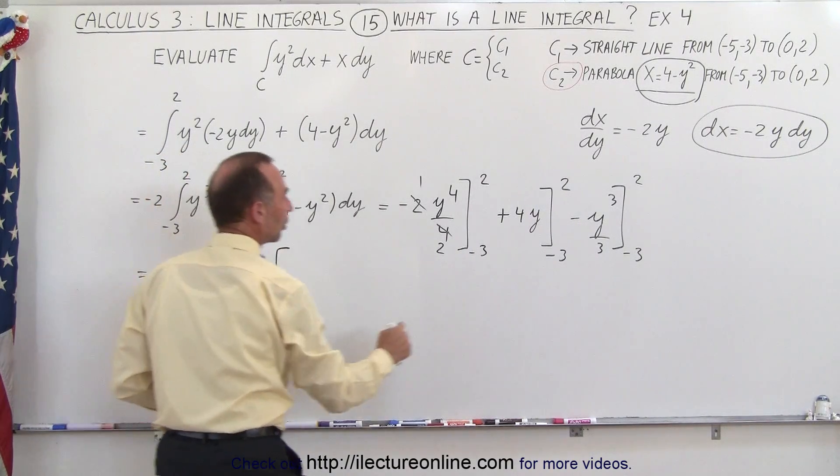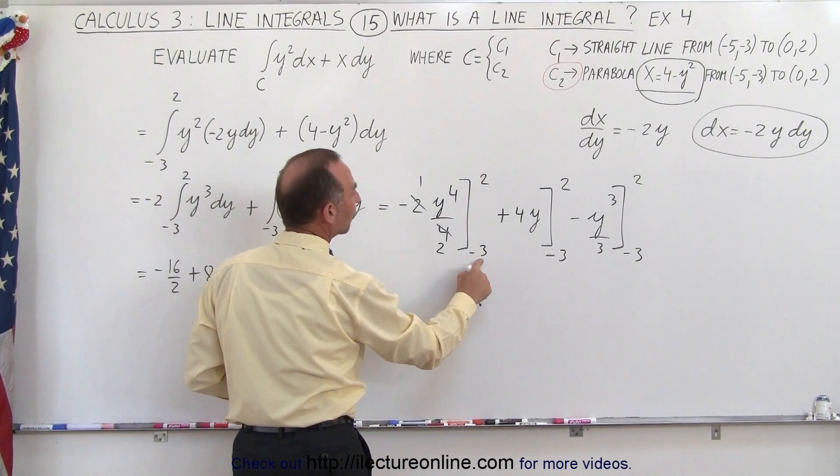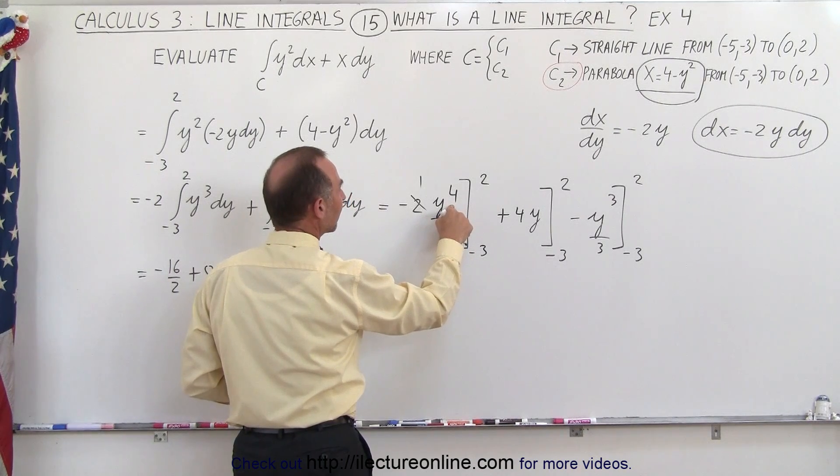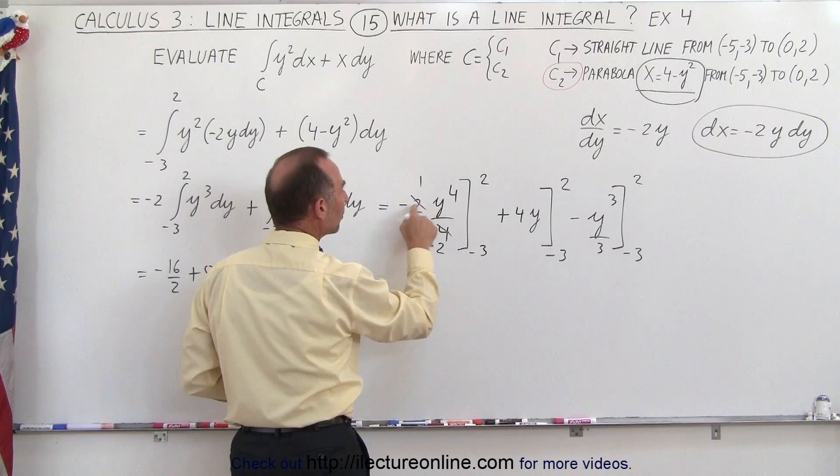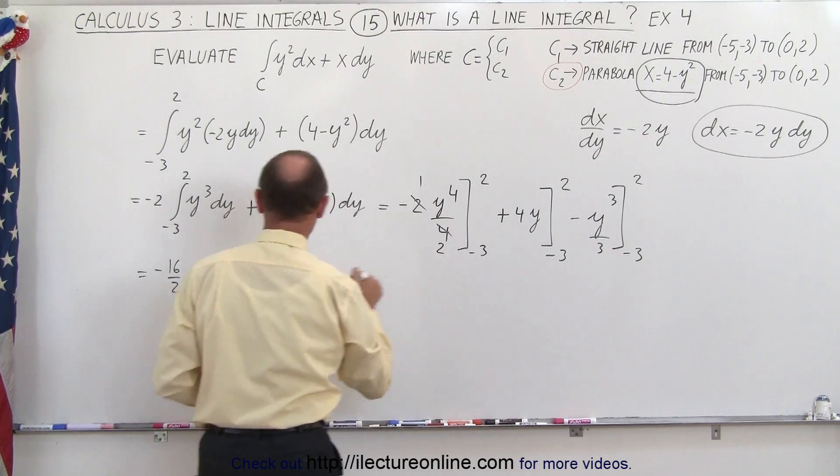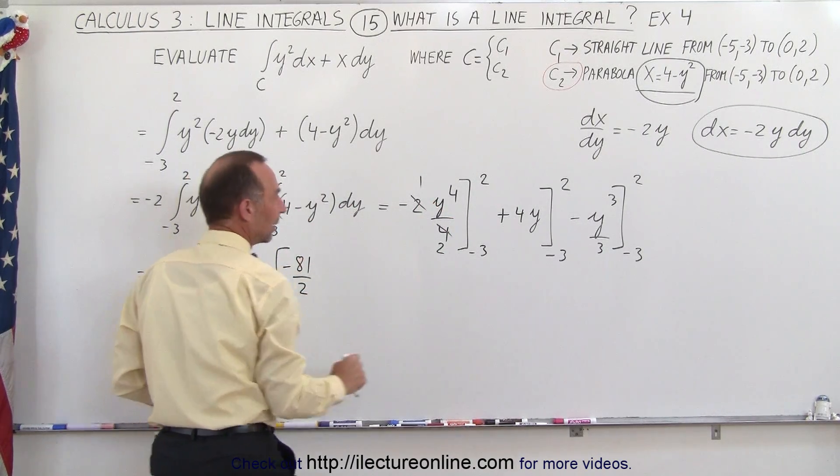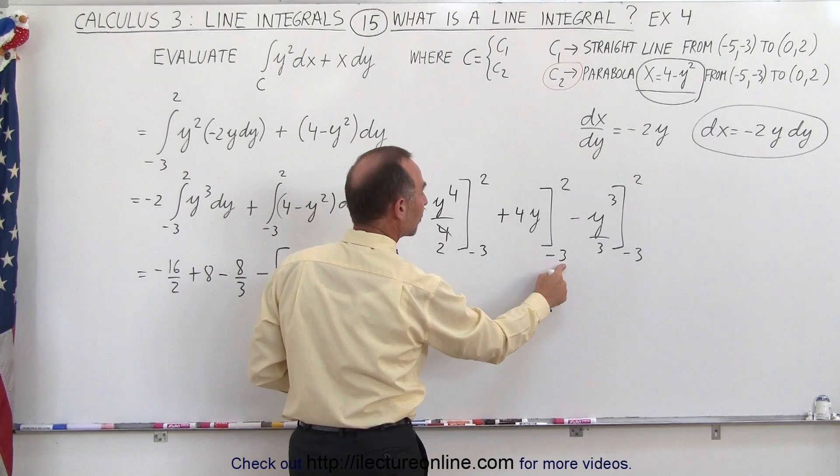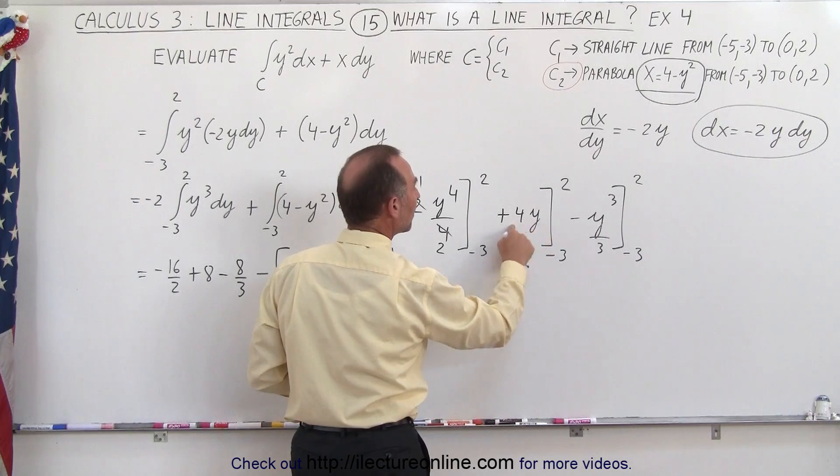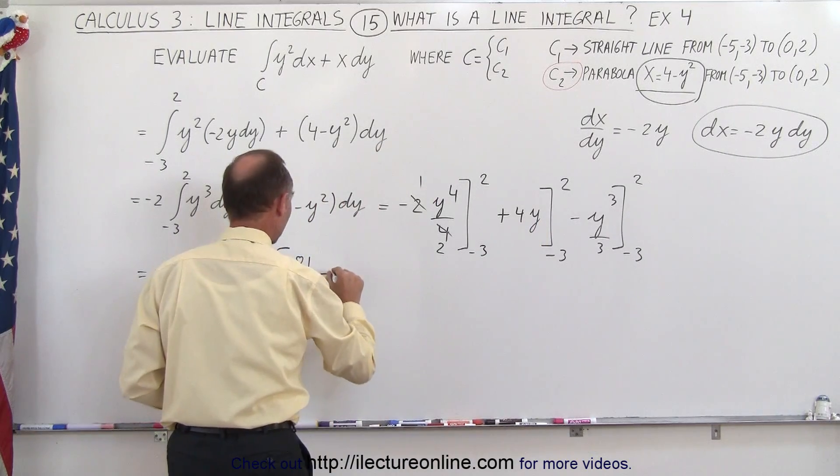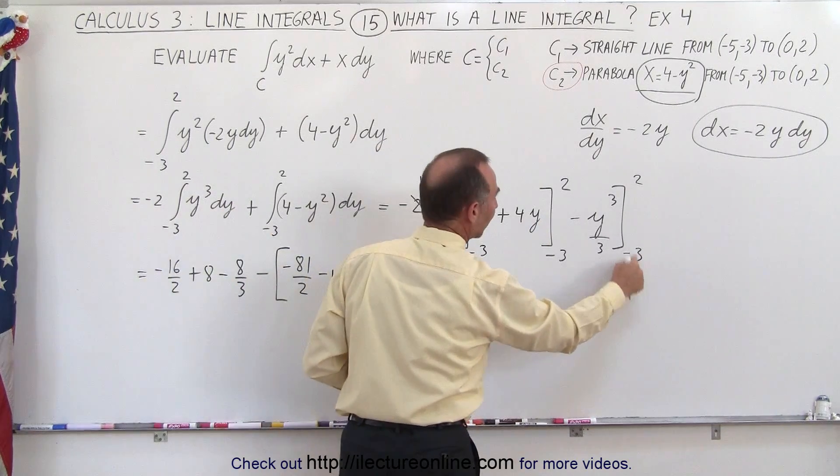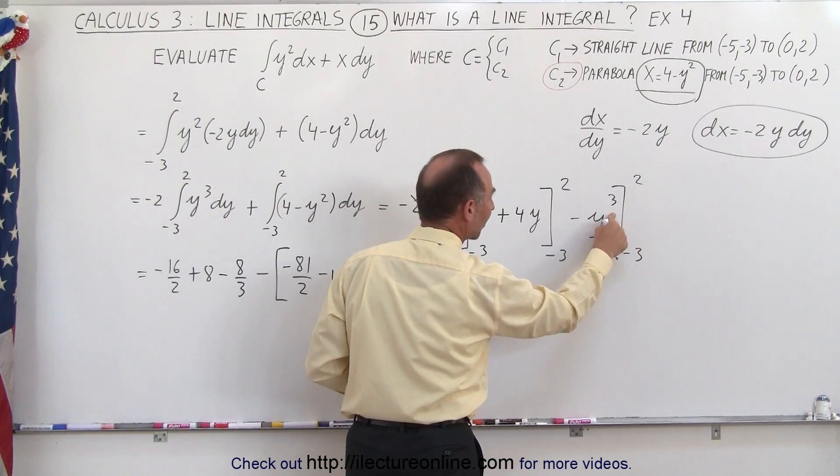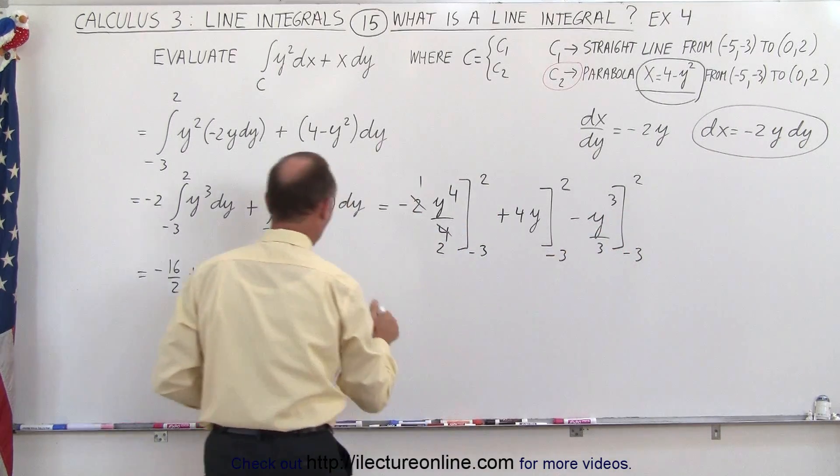Now let's plug in the lower limits. We have minus 3 to the fourth, that's 81, giving minus 81 divided by 2. Next we have 4 times negative 3, that's minus 12. And plugging in negative 3 to the last term, minus 27 times a minus gives plus 27 divided by 3, which is plus 9.